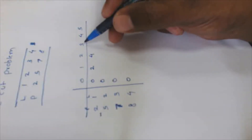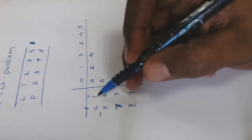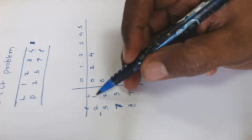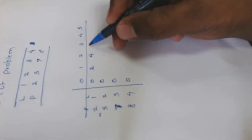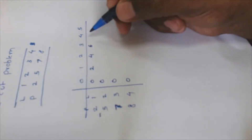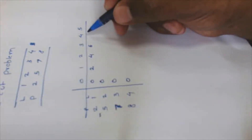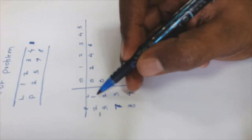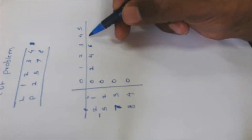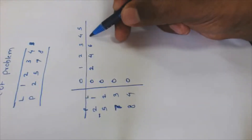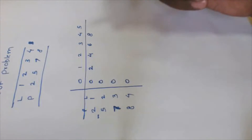If we have a rod of length three and the only option is selling rods of length one, the maximum profit is six. If we have a rod of length four, it is divided into four parts of length one, and the maximum profit we can gain is eight.